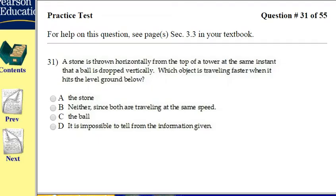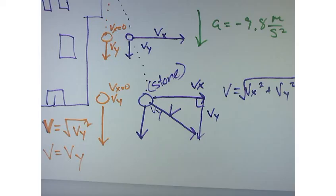So if we go back and we look at that question, problem number 31, it says a stone is thrown horizontally from the top of the tower. At the same instant a ball is dropped vertically, which object is traveling faster when it hits the ground? Well, what are they talking about? The X, the Y components, or the total vector? The total velocity vector. And we just saw that that was A. Does that make sense? You're welcome.